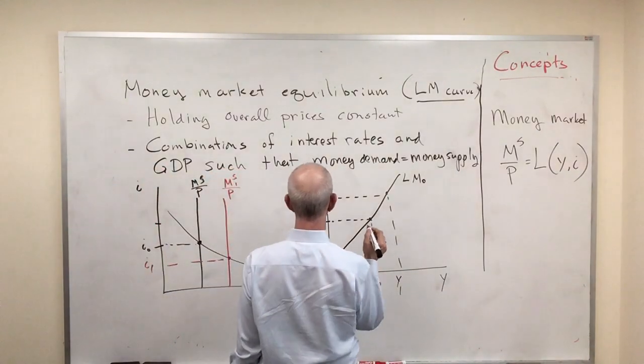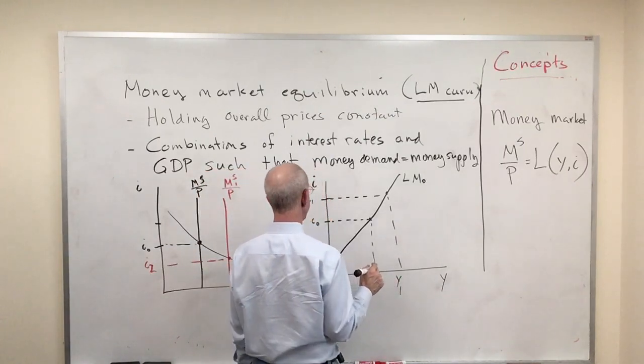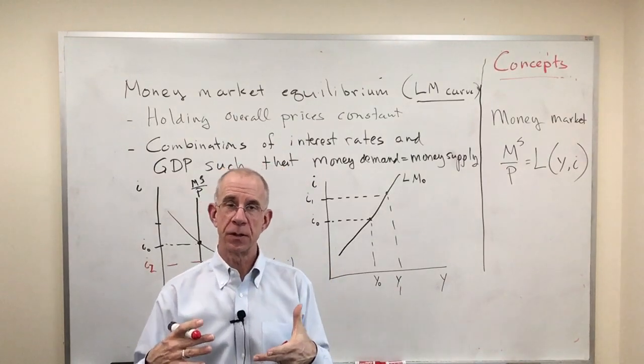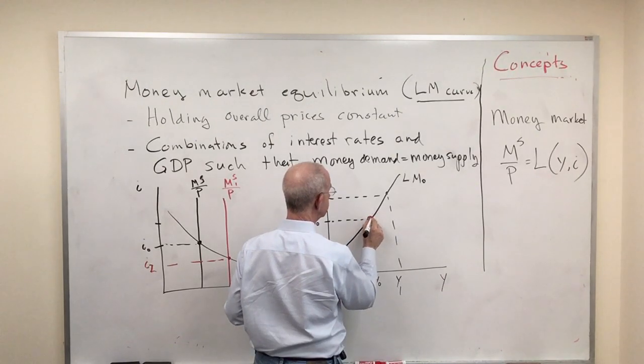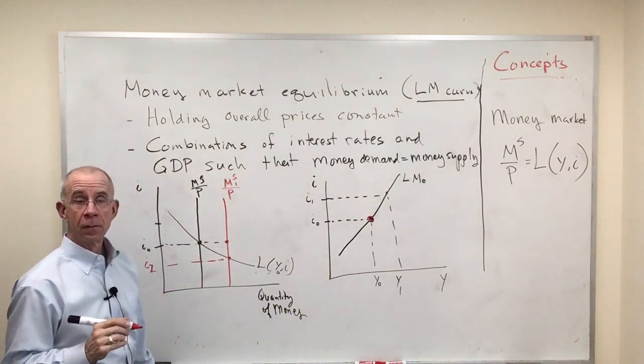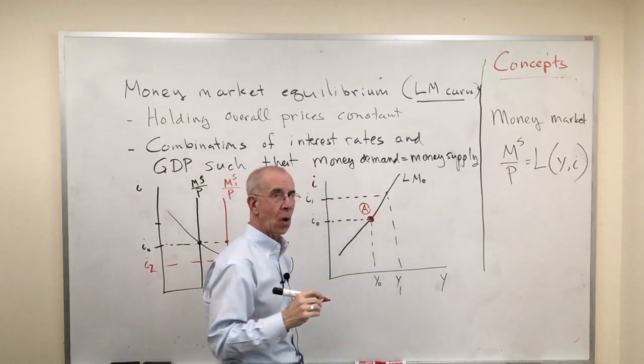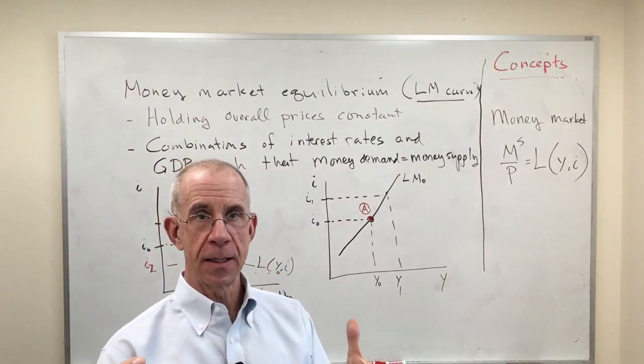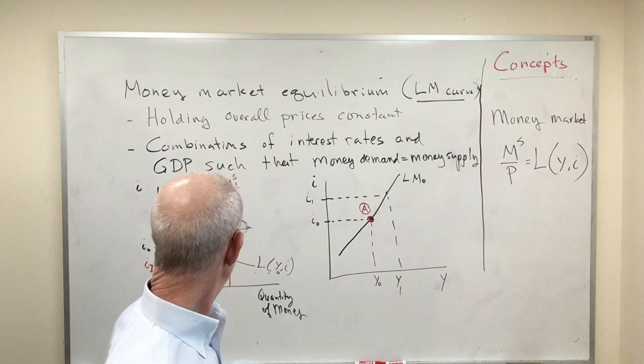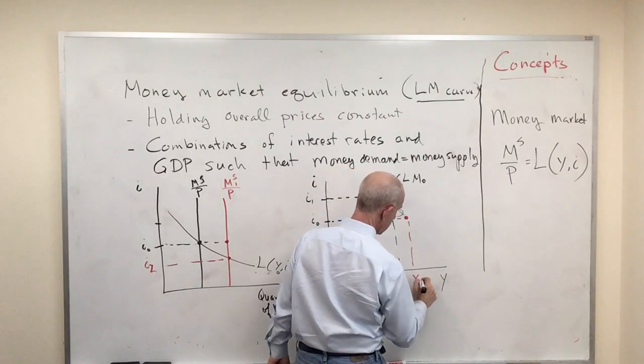So as the money supply goes up, interest rates fall. Now let's think about what would happen to the LM curve. I'll label that interest rate as I2. At this initial combination of interest rates and output, we had excess money supply at point A. We need the demand for money to rise. That demand for money will rise at the initial interest rates only if we had higher national income.